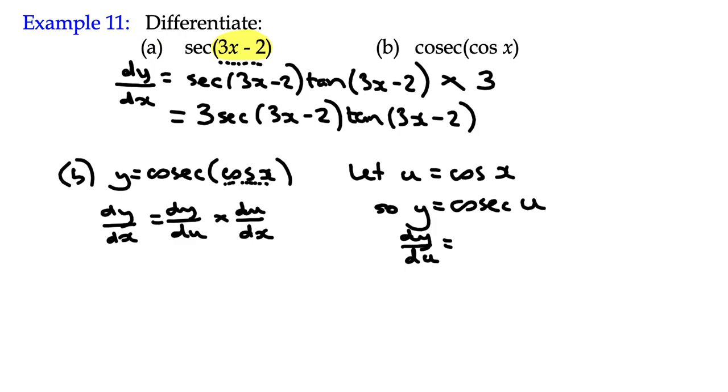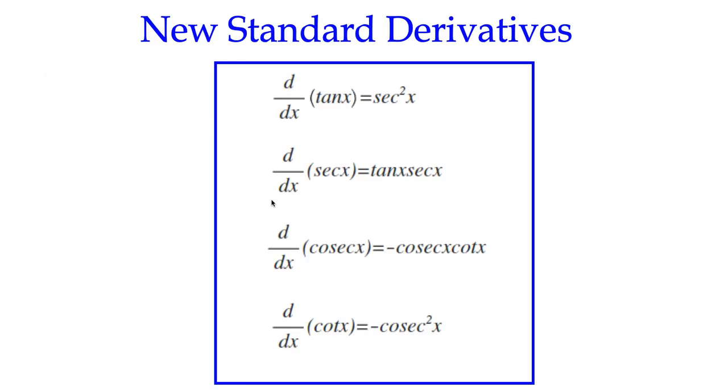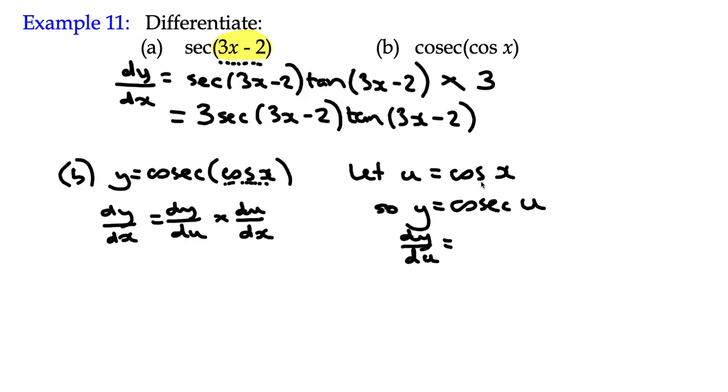And we want to differentiate cosec u. Well, if we go back to the previous page and look at cosec x, we've got negative cosec x multiplied by cot x. Again, we've got two terms multiplying negative cosec x, so it becomes negative cosec u multiplied by cot u. I'm using u instead of x, obviously. So that's me got my derivative dy by du.